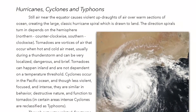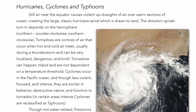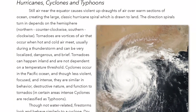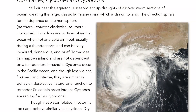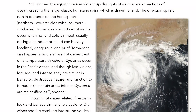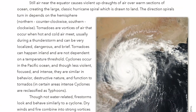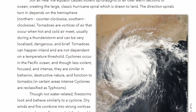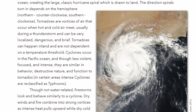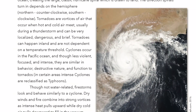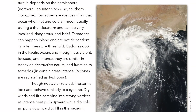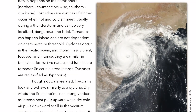Tornadoes are vortices of air that occur when hot and cold air meet, usually during a thunderstorm, and can be very localized, dangerous, and brief. Tornadoes can happen inland and are not dependent on a temperature threshold. Cyclones occur in the Pacific Ocean and, though less violent, focused, and intense, they are similar in behavior, destructive nature, and function to tornadoes.